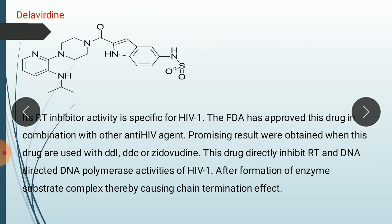The next drug is Delavirdine. Its reverse transcriptase inhibition activity is specific for HIV-1. The FDA has approved this drug in combination with other anti-HIV agents. Promising results were obtained when this drug is used with ddI, ddC, lamivudine or zidovudine. This drug directly inhibits reverse transcriptase and DNA-directed DNA polymerase activity of HIV-1, after formation of the enzyme-substrate complex, thereby causing a chain termination effect.